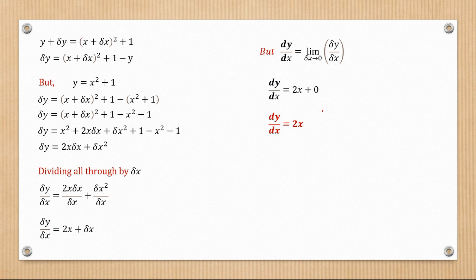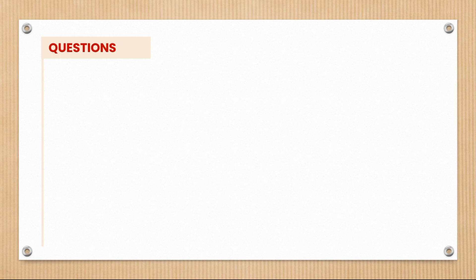And that is how we solve this example using first principles. As I told you at the beginning, we already knew that differentiating x squared plus 1 gives 2x as the final answer. This is how we do it using first principles — and it's actually exciting because you can verify the answer you already know.